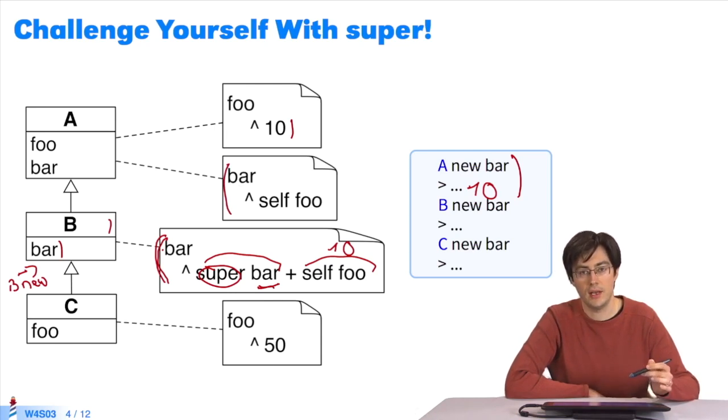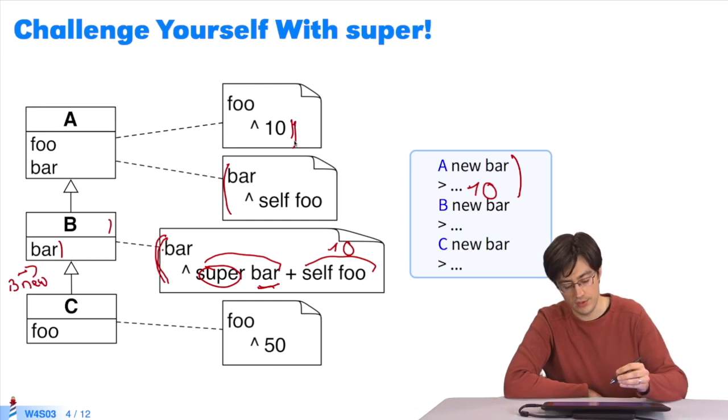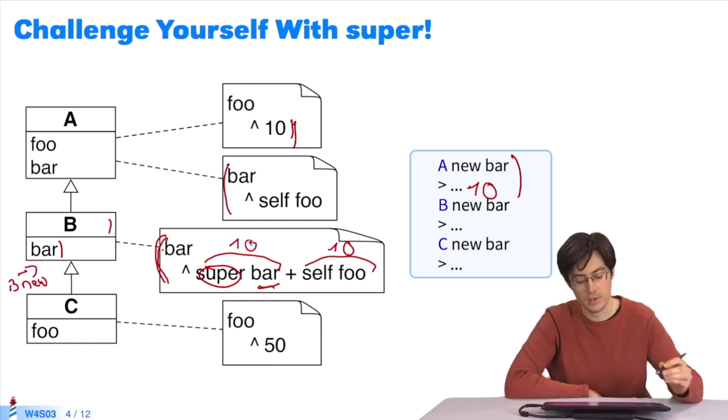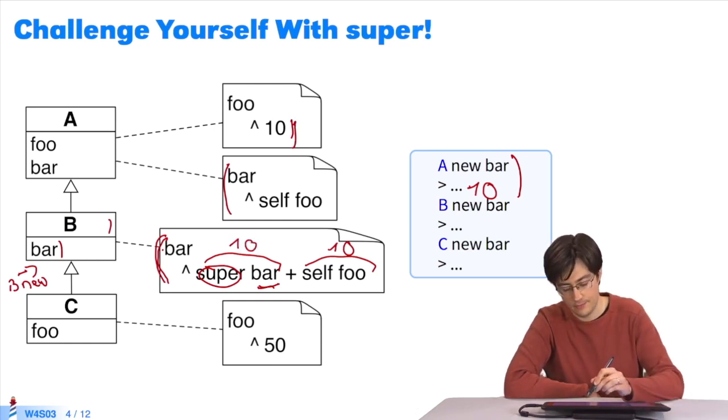Foo is sent to self. Self is always the receiving object. It is b new, so foo is sent to the initial object. This is the foo that is executed, returning 10. 10 plus 10 equals 20.